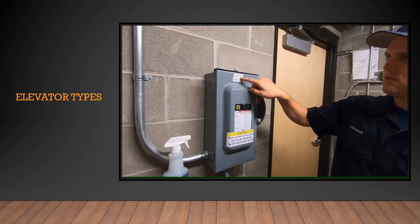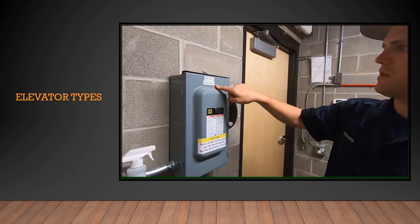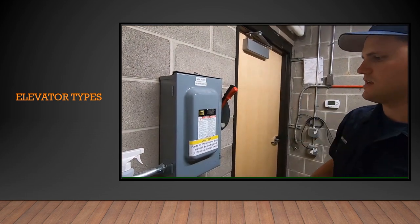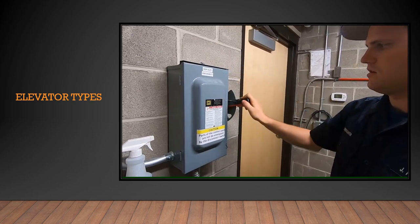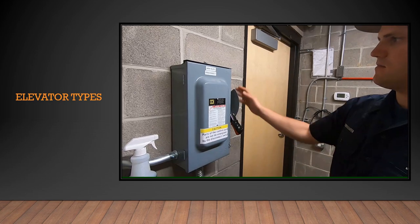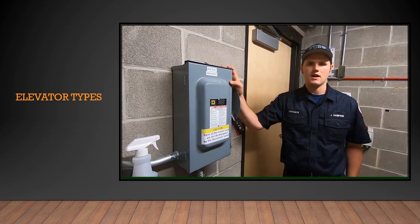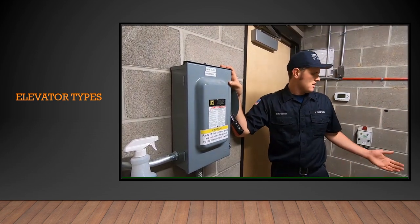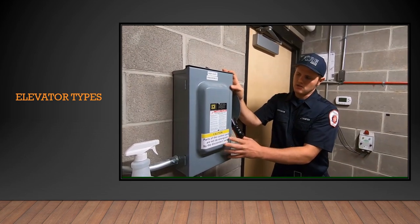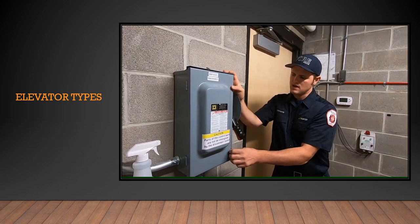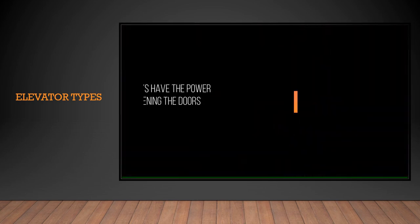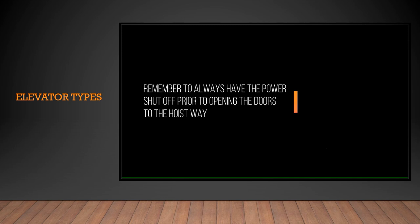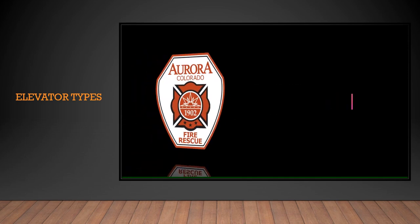The elevator power disconnect will be labeled. In this building with one elevator, it's labeled 'MDP elevator disconnect.' This is the major power source that needs to be shut off — it's a standard pull-down shutoff. If it's going to be an extensive rescue and you have a machine room, keep a firefighter here with the power shut off, or use your lockout tagout kit so nobody can turn it back on. Remember: power to the elevator motor must be off prior to opening the doors to the elevator shaft. This is important for the safety of the occupants and the safety of our firefighters.